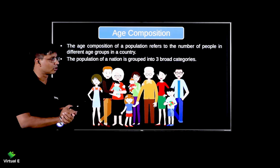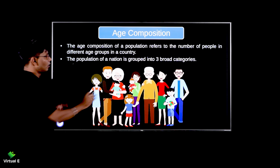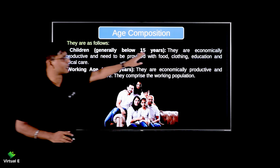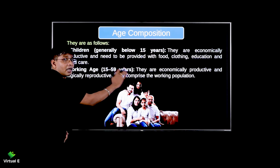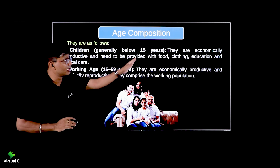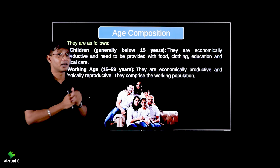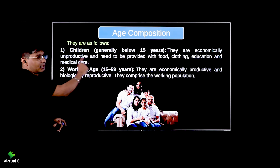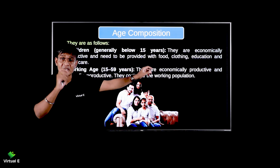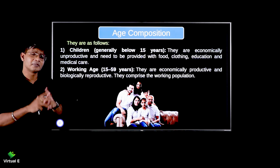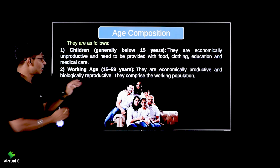Next topic is age composition, which this picture makes very clear. Age composition has three simple categories. First: children below 15 years of age. Second: 15 to 59 years of age. Children below 15 are economically dependent on their parents or earning family members — they are dependent population. But they are future resources, and we invest in them through education, health, and training to make them future working population.